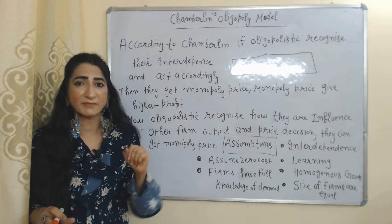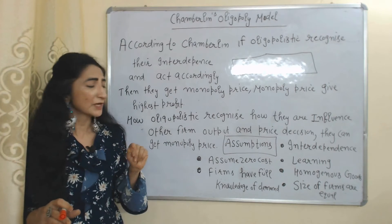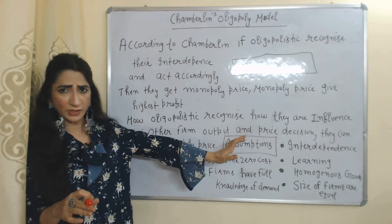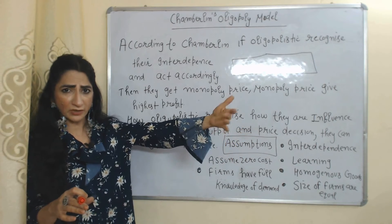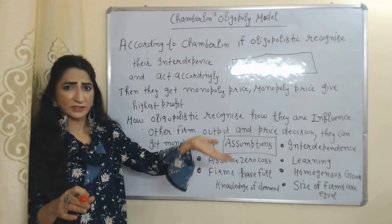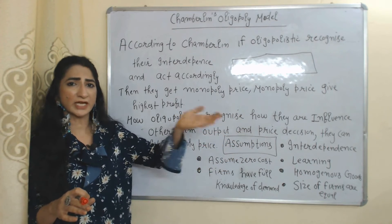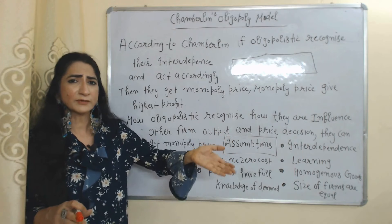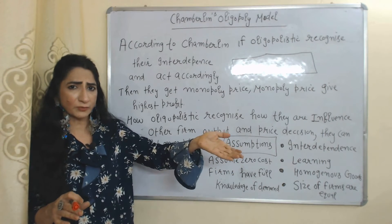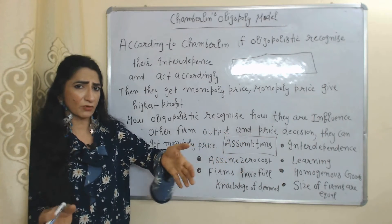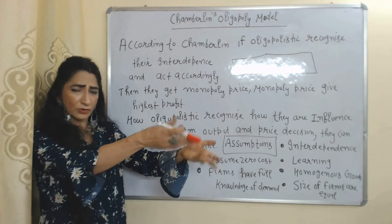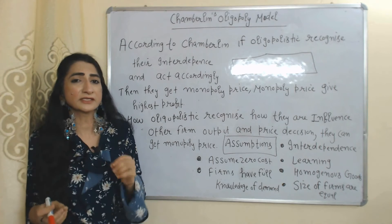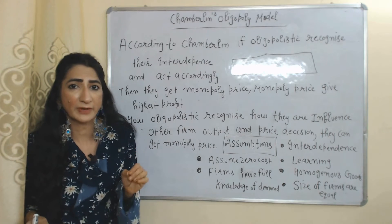According to this model, if oligopolists get to know how they are influenced by other firms' price and output decisions, and they also act according to them, then they can definitely receive monopoly price which gives them maximum profit.